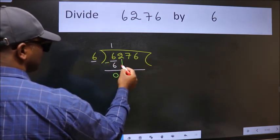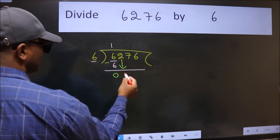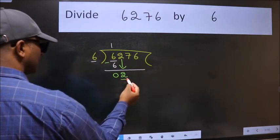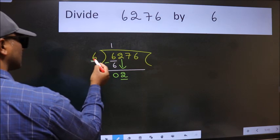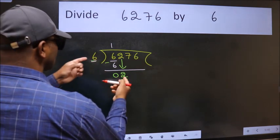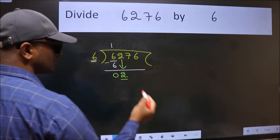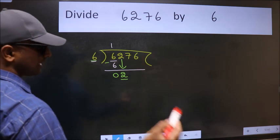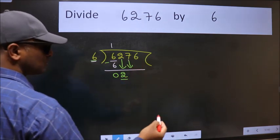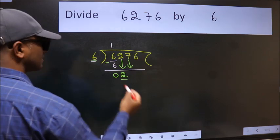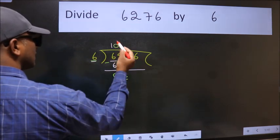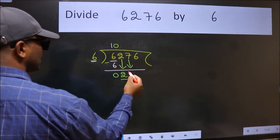After this bring down the beside number. So 2 down. Now here we have 2 and here 6. 2 is smaller than 6. So we should bring down the second number. And the rule to bring down second number is put 0 here. Then only we can bring this number down.